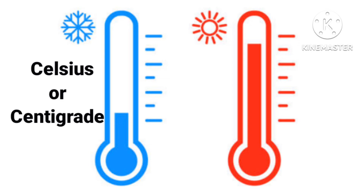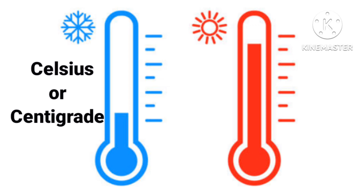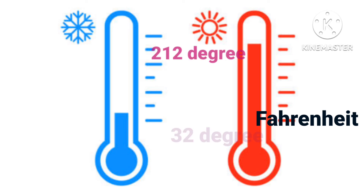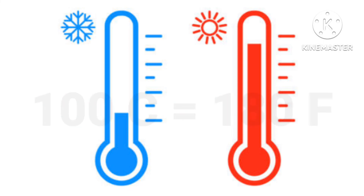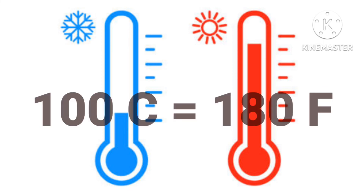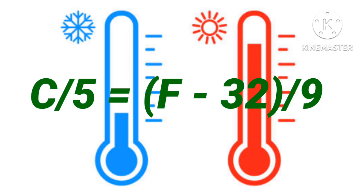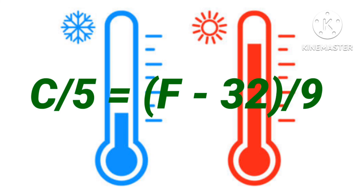The Celsius scale is also called the centigrade scale. Its lower point is the freezing point of water, that is zero degrees, and its highest point is the boiling point of water, that is 100 degrees — so the total division is 100. On the other hand, the lowest point of the Fahrenheit scale is 32 degrees and the highest point is 212 degrees, giving a total division of 180. So we can say that 100 degrees Celsius equals 180 degrees Fahrenheit. Solving this relation numerically gives us the formula: C/5 = (F − 32)/9. Using this relationship, we can convert a Celsius temperature to Fahrenheit and vice versa.